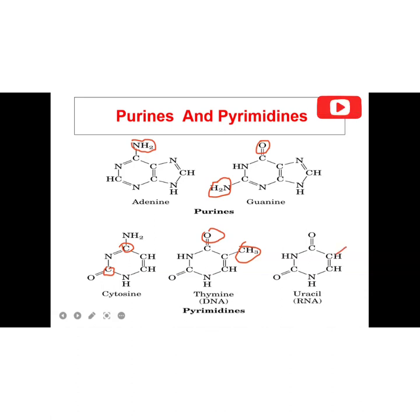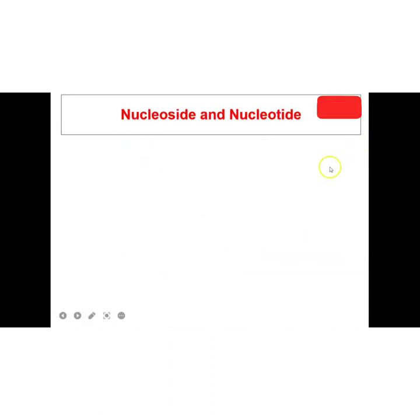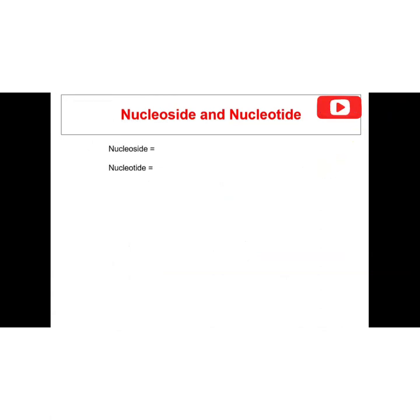For uracil, you can see it is almost the same as thymine except for the CH3 group that is absent at that carbon. That is how you can differentiate the different pyrimidines.